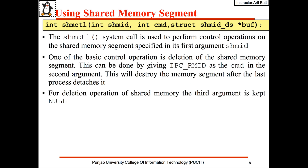The shmctl call is used to perform control operations on the shared memory segment. One of the basic control operations we will perform is the deletion of the shared memory, and for that the second argument to shmctl will be IPC_RMID.